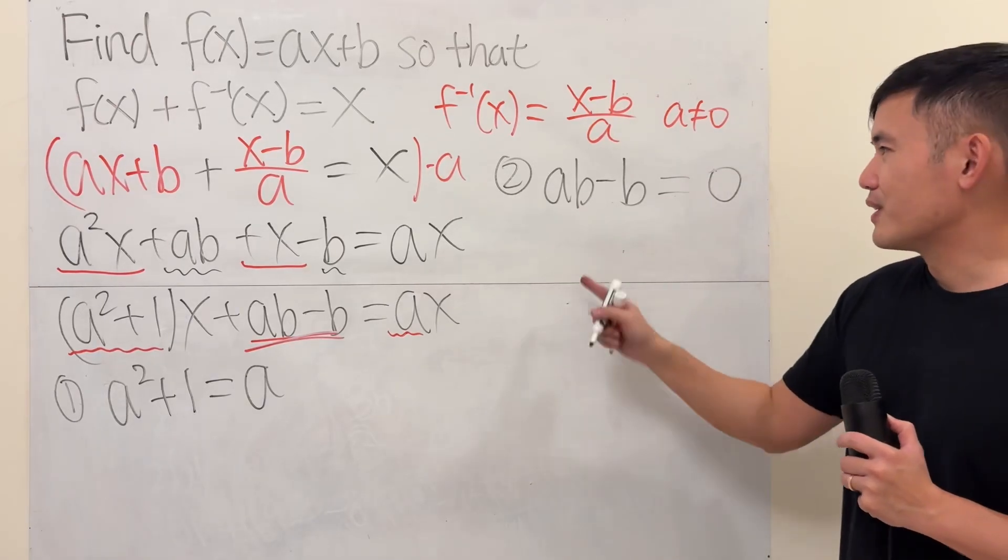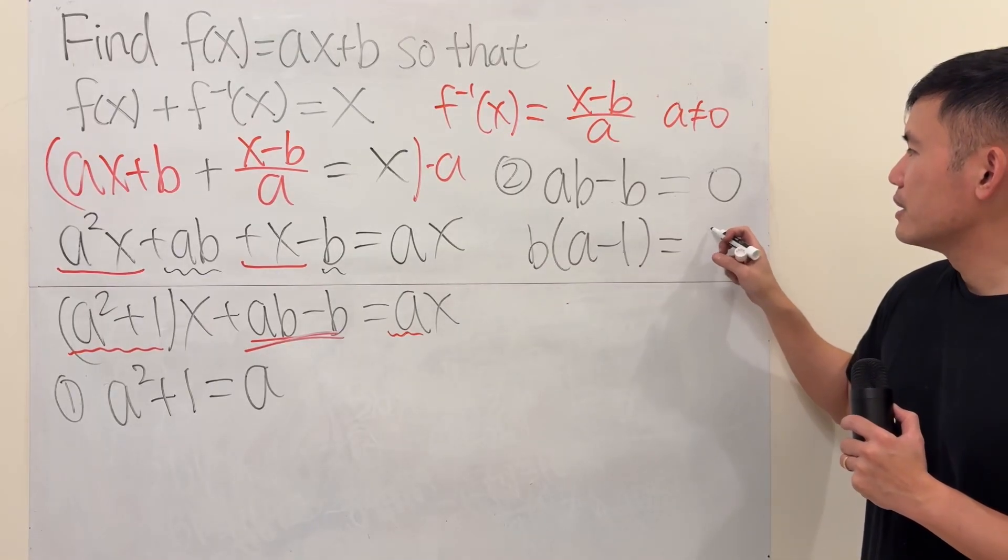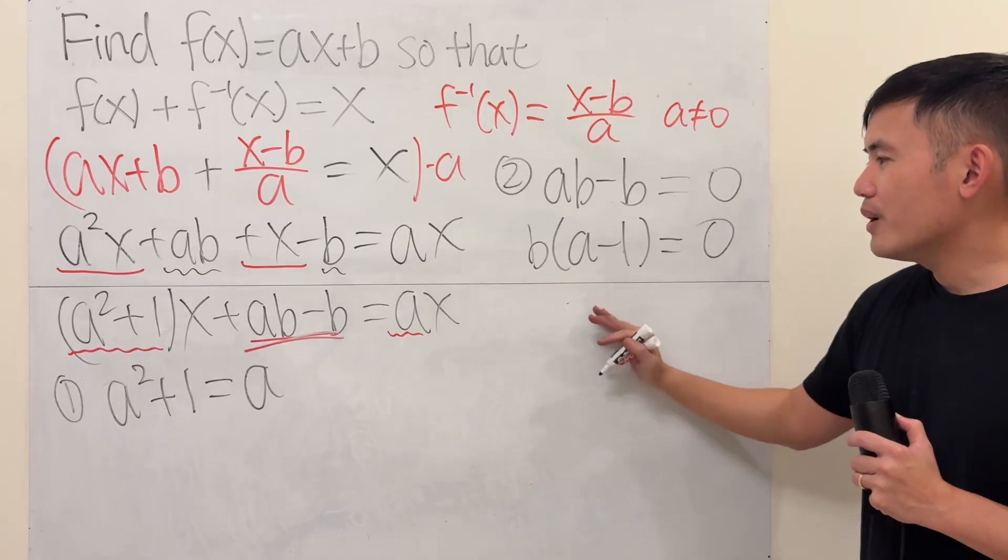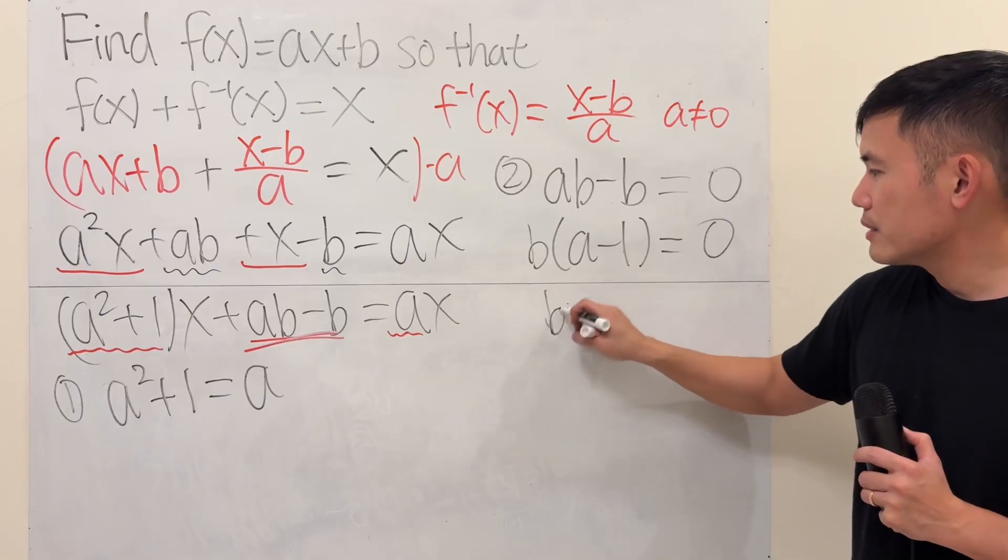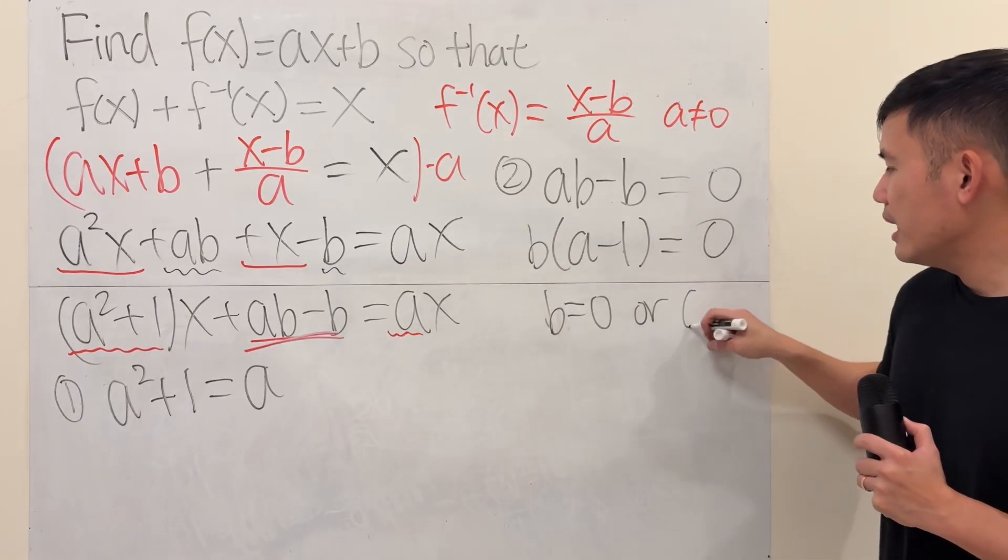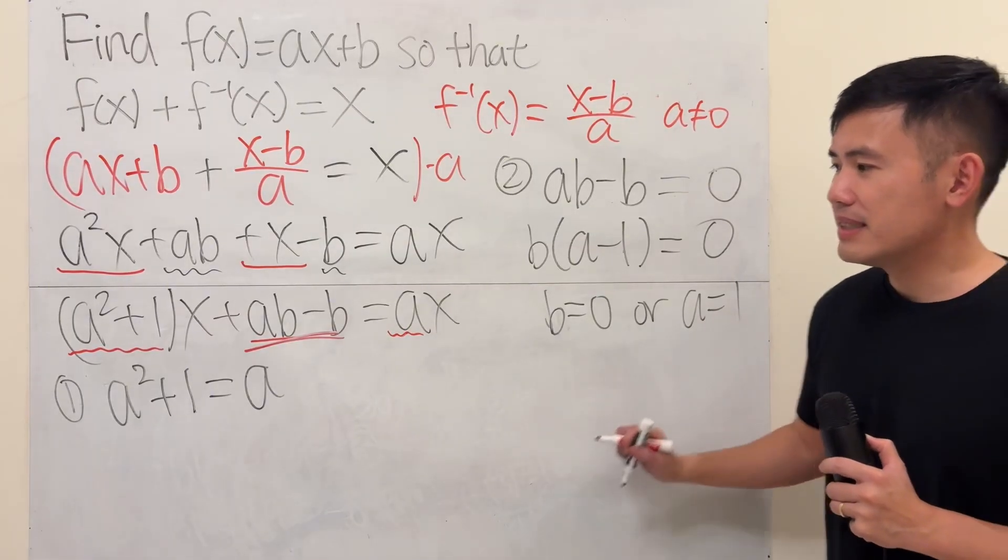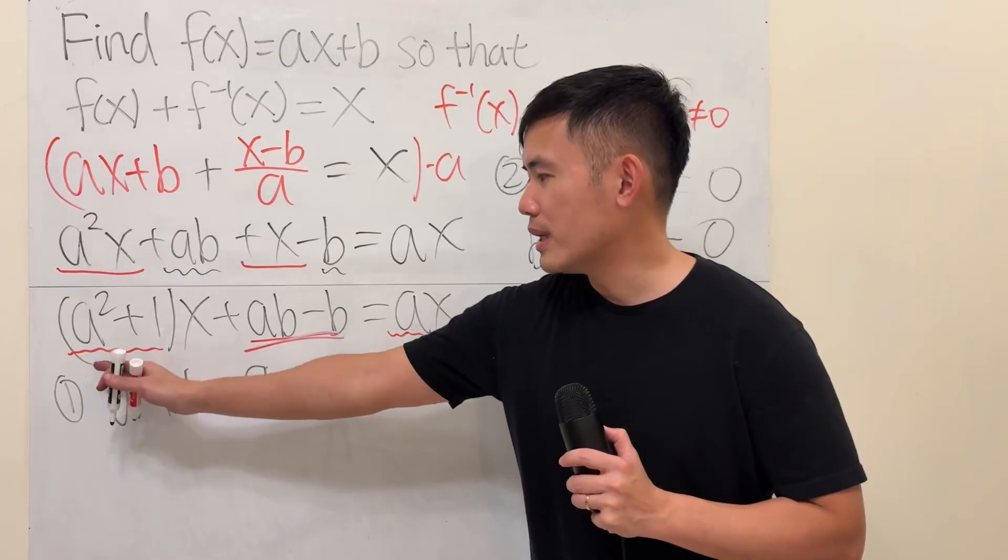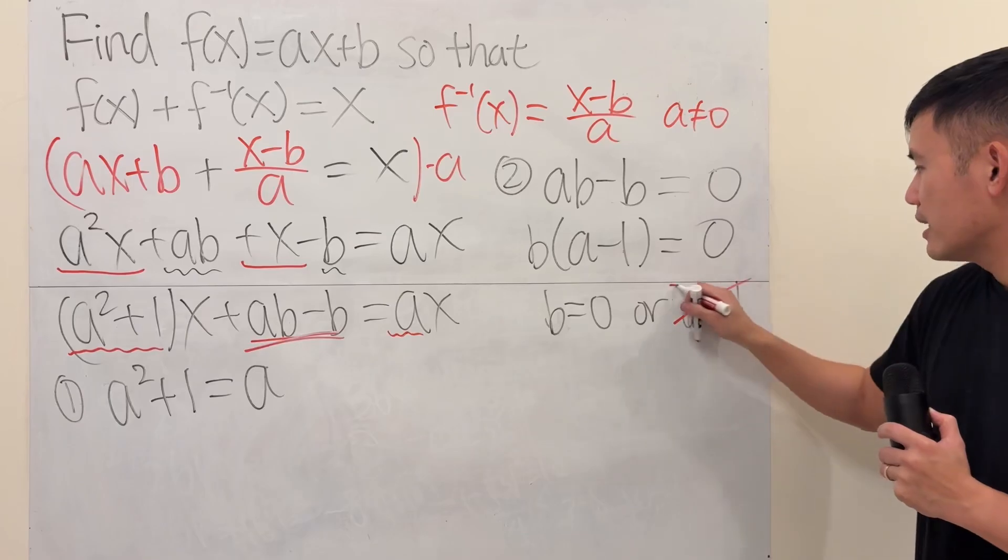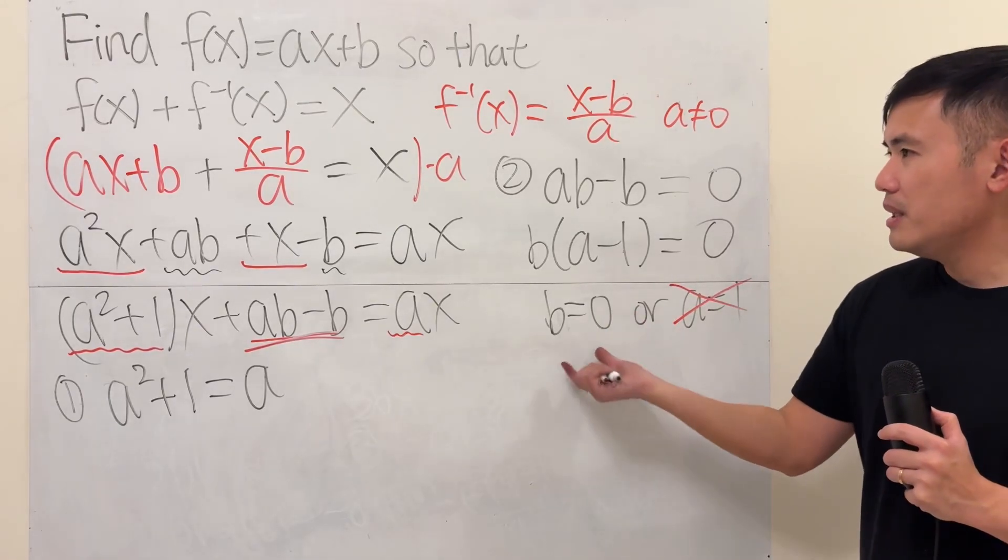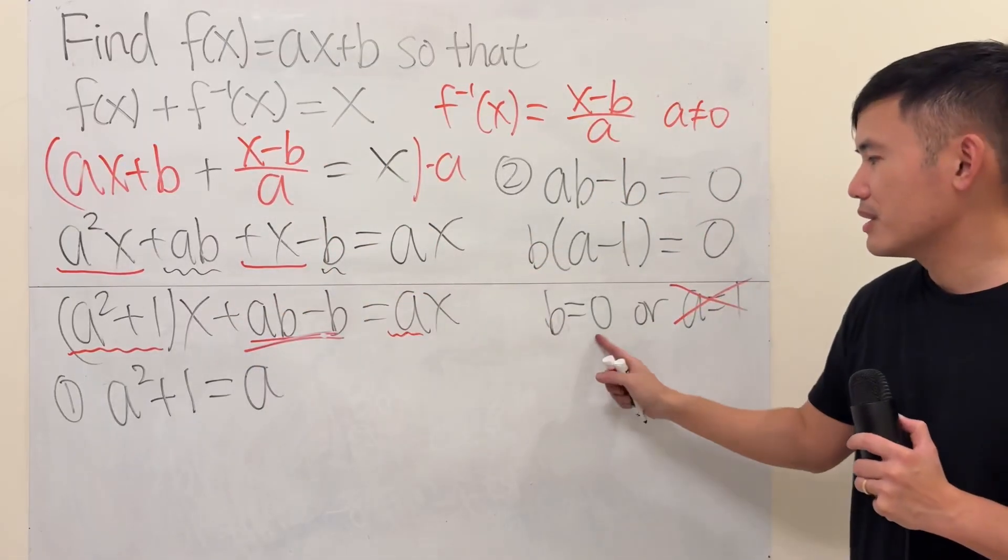This is slightly easier to solve. Let's solve this first. Factor out the b. a minus 1 is equal to 0. Well, be careful with this. It's either b equals 0, or a equals 1. But I will tell you, a equals 1 is not going to make this work, because we get 1 squared plus 1, which is 2. It's equal to 1. That's not going to work. So, this is not a consideration. b is equal to 0, then that's out, that's out. So, we don't have this part. So, that's good. This is what we need.